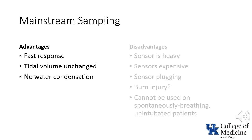The absence of water condensation is also an advantage of mainstream capnometry. Because the device is heated, no water condensation occurs. This is in contrast to a sidestream capnometer where a water trap is necessary due to condensation, and the presence of water in the water trap can result in inaccurate readings.